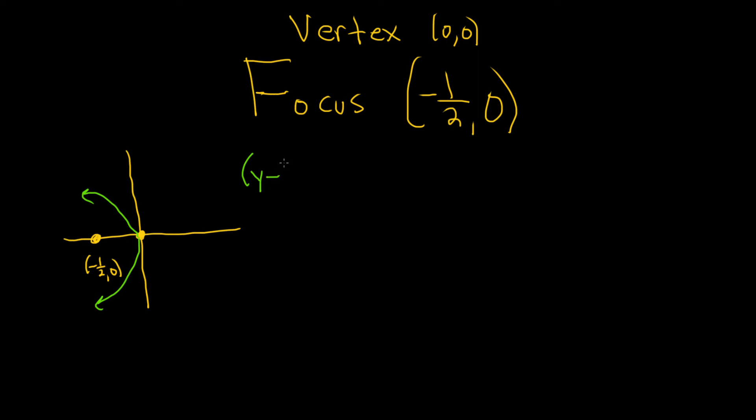So this would be (y - k)² = 4c(x - h). That's the formula. So this is the formula for a parabola that opens left and right.